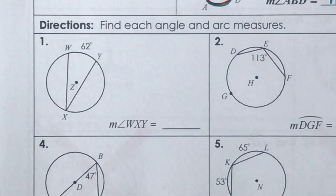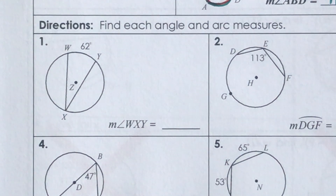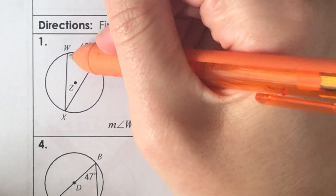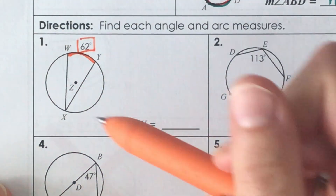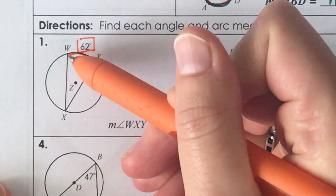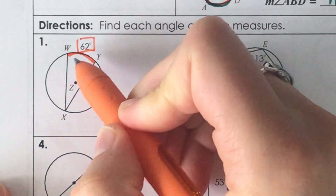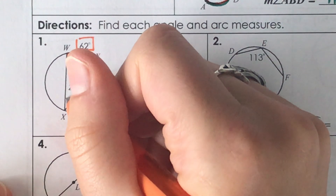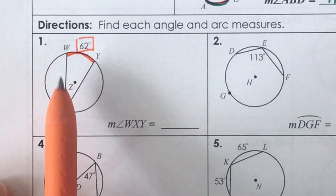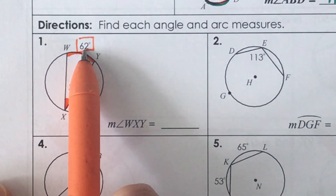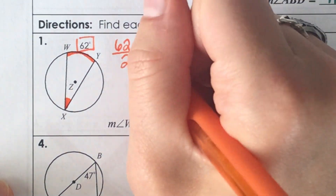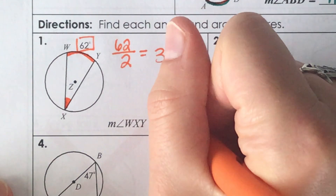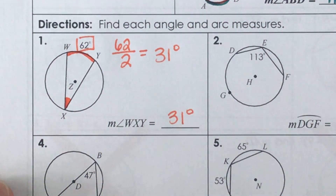Number one: I know that arc WY is 62 degrees. This arc is inscribed — it's not at the center but goes to the other edge. That means angle WXY on the inside should be half of 62. So I take 62 divided by 2 and get 31 degrees. This little angle in here is 31 degrees.